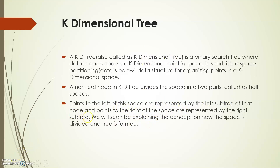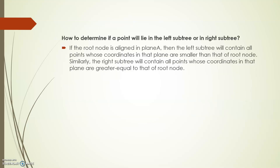Now we'll see how the space is divided and how we construct the tree. To determine if a point is on the left or the right, we check based on certain criteria. If the root node is aligned in plane A, the left subtree will contain all points smaller than the root node, and the right subtree will contain points greater than the root node, based on their coordinates in that plane.